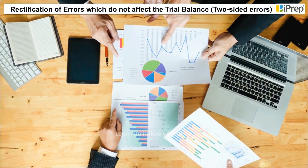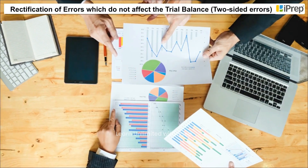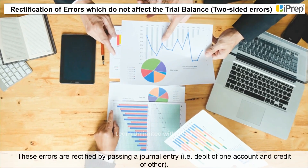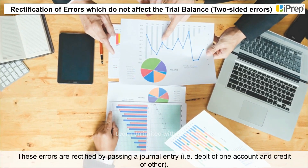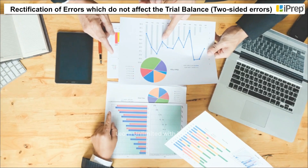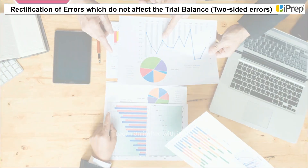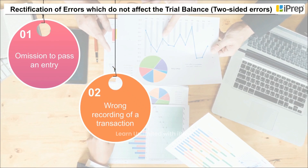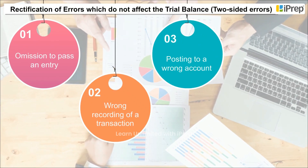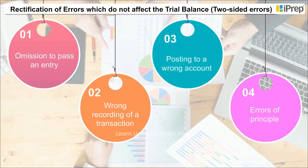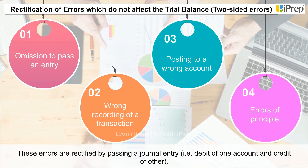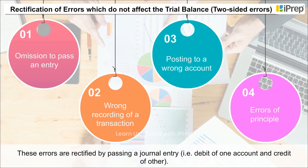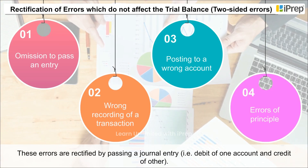Rectification of errors which do not affect the trial balance: Two-sided errors affect two accounts simultaneously. Examples include omission to pass an entry, wrong recording of a transaction, posting to a wrong account, and errors of principle. These errors are rectified by passing a journal entry — a debit of one account and credit of another.